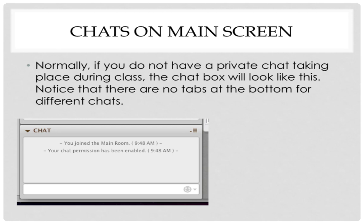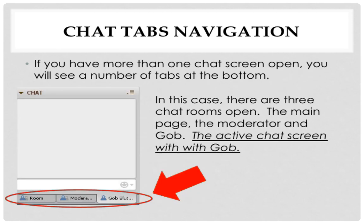If you have more than one chat screen open, you will see a number of tabs as shown at the bottom of the screen. In this case, there are three chat rooms open: the main page, the moderator, and GOB — whoever GOB is. It appears that the active chat screen is the chat with GOB.